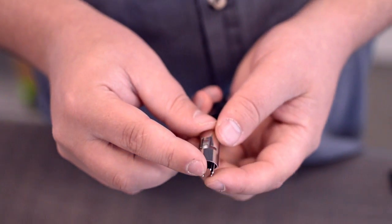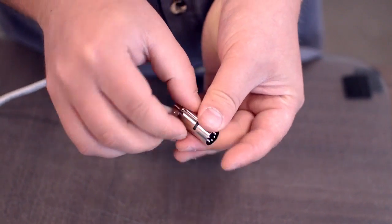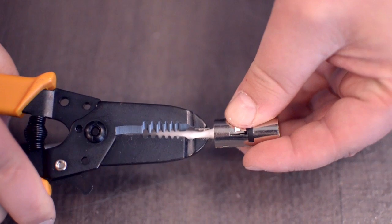After you have soldered the necessary points on the connector, place the metal shell around the pins. Squeeze the strain relief tab onto the cable jacket and slide up the boot.